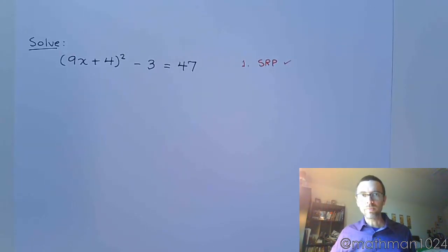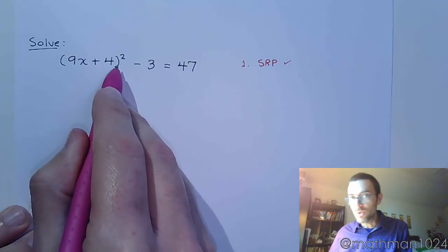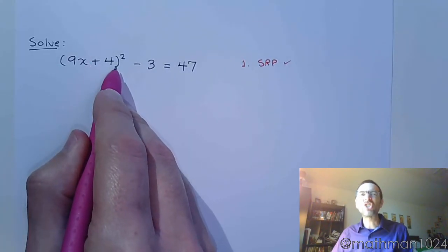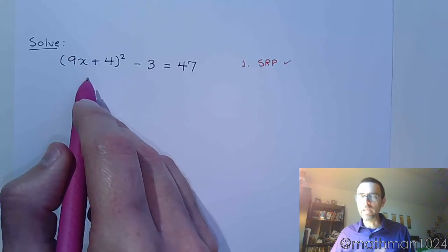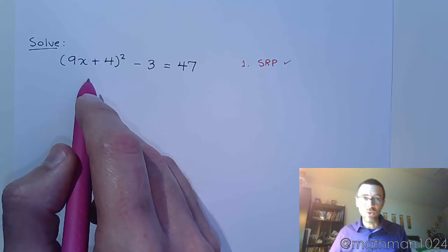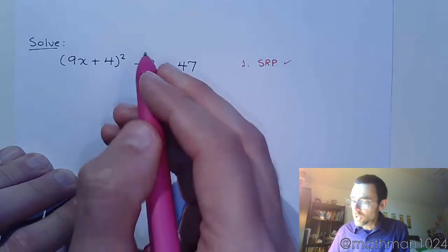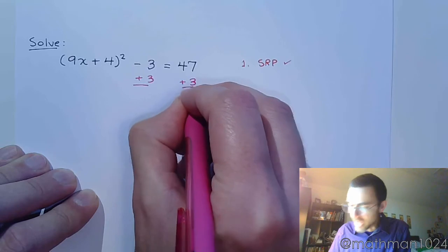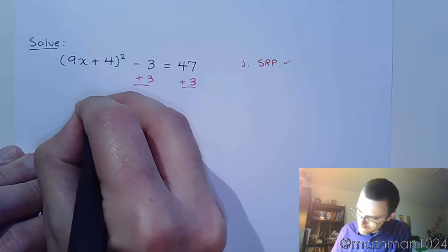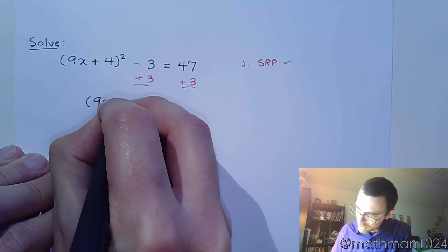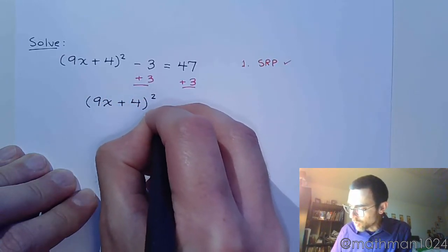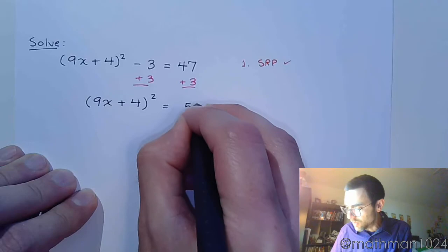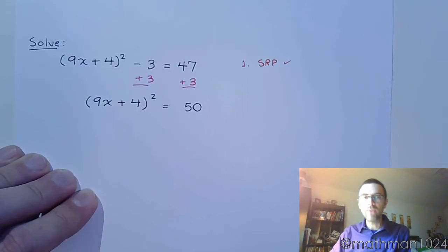So, now we just have to start peeling away those layers. Remember that in order for us to use the square root property, we have to get the square by itself. Do not, do not try to expand this. Don't try to square this stuff out. That's bad. It creates more work, and more often than not, students don't square it correctly. So, instead, move the 3 to the other side. Isolate that square. So, we have 9x plus 4, quantity squared, is equal to 50.